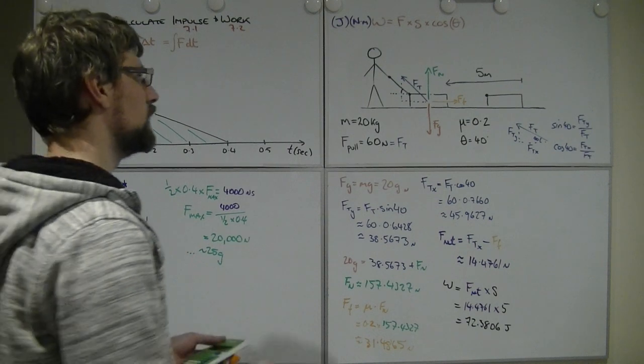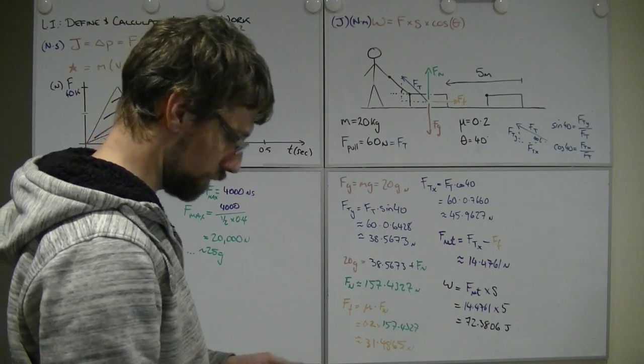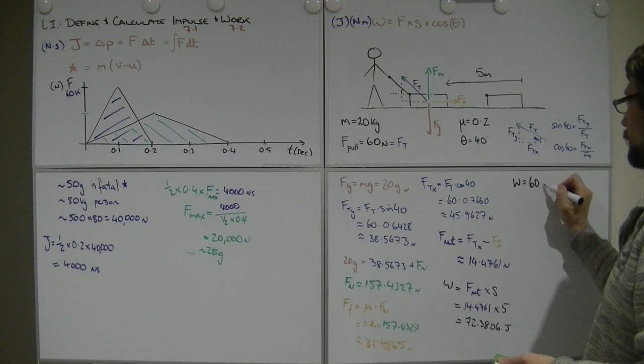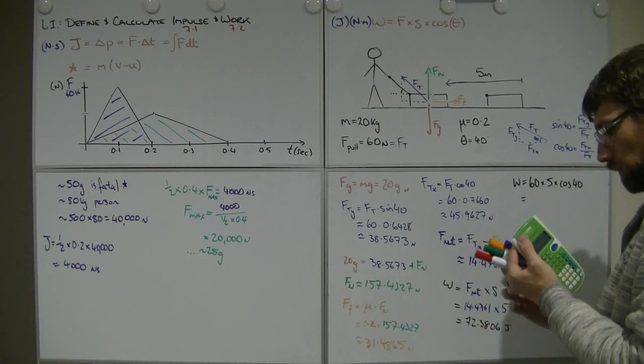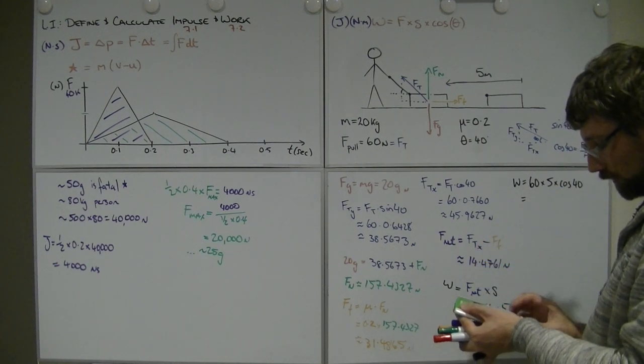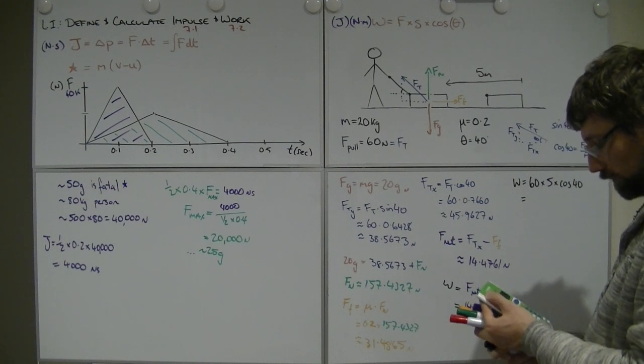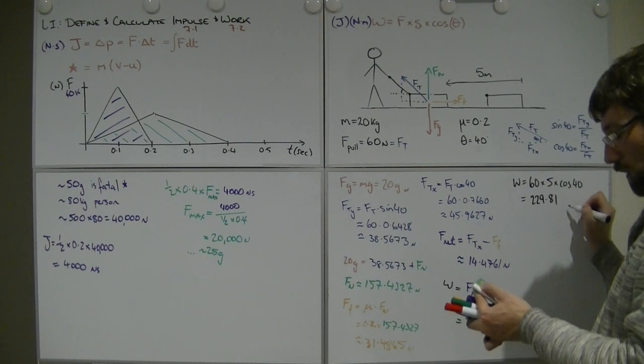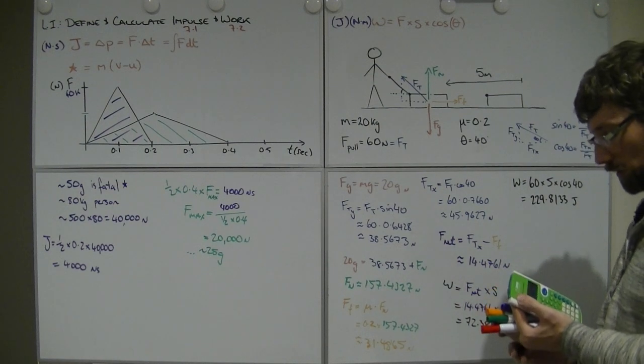Hang on, we didn't use this. What's that talking about? Let's give it a go. We've got work equals original force, 60, multiplied by distance, five, multiplied by cos of 40. 60 multiply five multiply cos 40 gives 229.8133 joules. Well, these are clearly very different numbers. What's going on here?